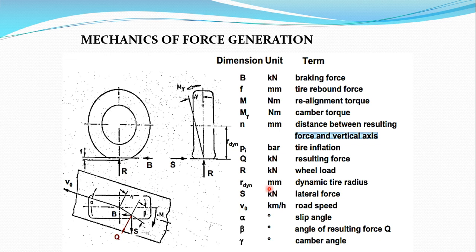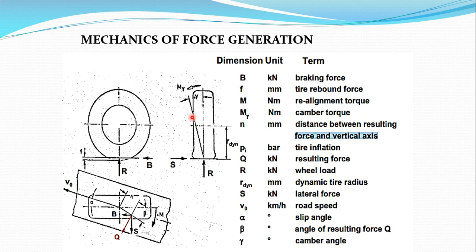R also represents the dynamic tire radius — when the tire is taking a turn or due to deformation, the dynamic radius will not be uniform while running. S is the lateral force discussed previously. V-naught represents road speed, the speed at which the vehicle is moving. Alpha represents the slip angle — the angle between the heading and the travel direction. Beta is the angle of the resultant force with respect to the vertical axis. Gamma represents the camber angle, with positive and negative camber as previously discussed.